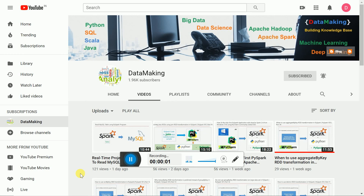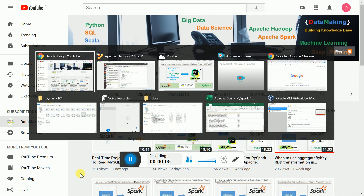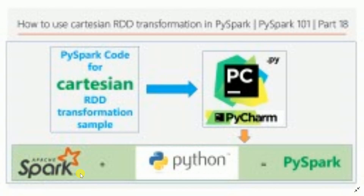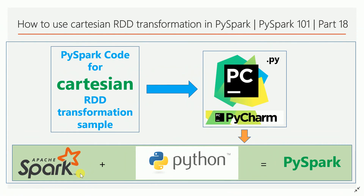Hello friends, welcome to my channel Data Making. In this video I am going to discuss about the next transformation called Cartesian. The Cartesian transformation basically gives the result as a Cartesian product.